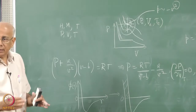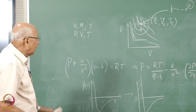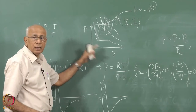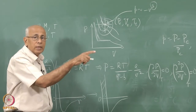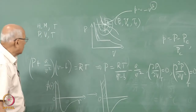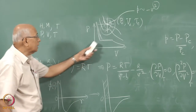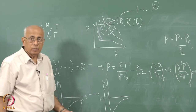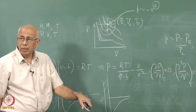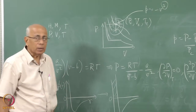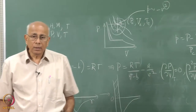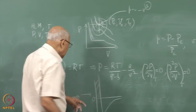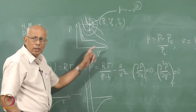This power of 3 is called a critical exponent. Similarly, one can use the same equation to derive the T-ρ (density) behaviour, obtaining the parabolic coexistence curve near T_c.